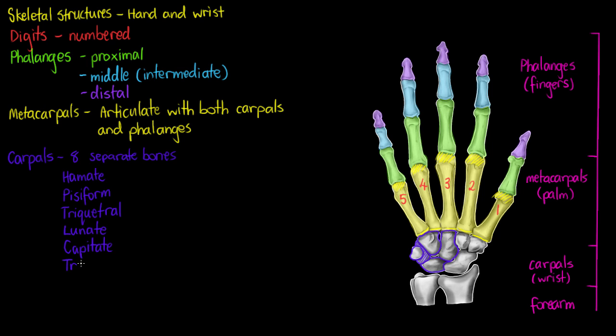Right next to the capitate we have the trapezoid. The trapezoid is a much smaller carpal, and it is right here.